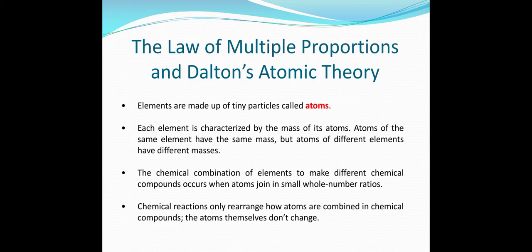Chemical combination of elements to make different compounds occurs when atoms join in small whole-number ratios, as seen with nitrogen oxide and nitrogen dioxide. Importantly, chemical reactions only rearrange how atoms are combined in compounds — the atoms themselves do not change during a chemical reaction; they simply rearrange themselves.